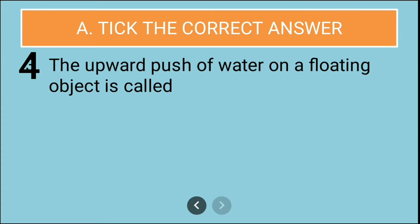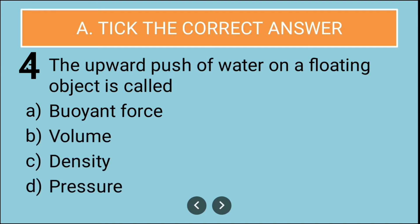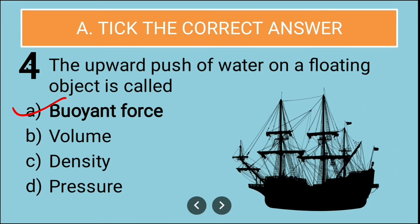Our next question is: the upward push of water on a floating object is called. The options are buoyant force, volume, density, pressure. So what is the correct answer? Right, buoyant force. So the upward push of water on a floating object is called buoyant force.